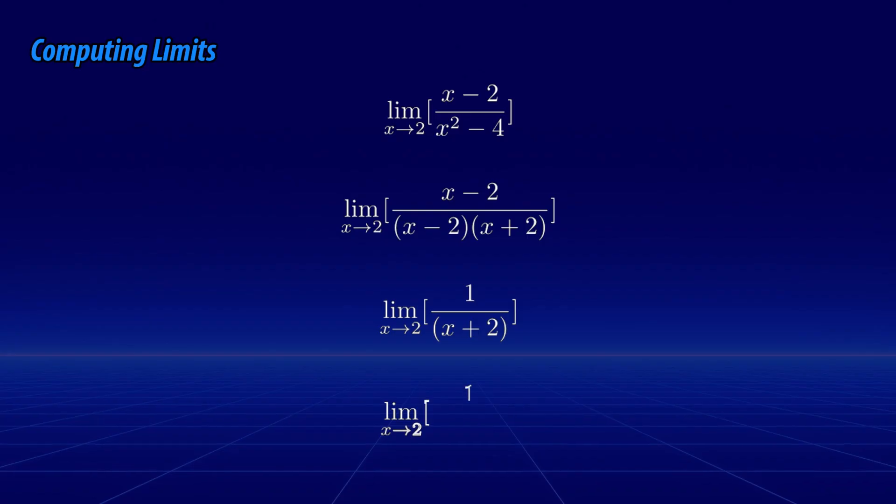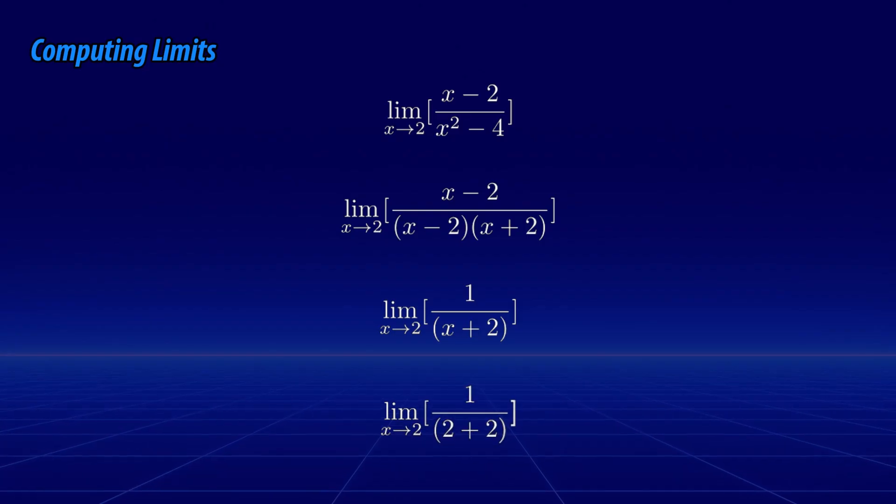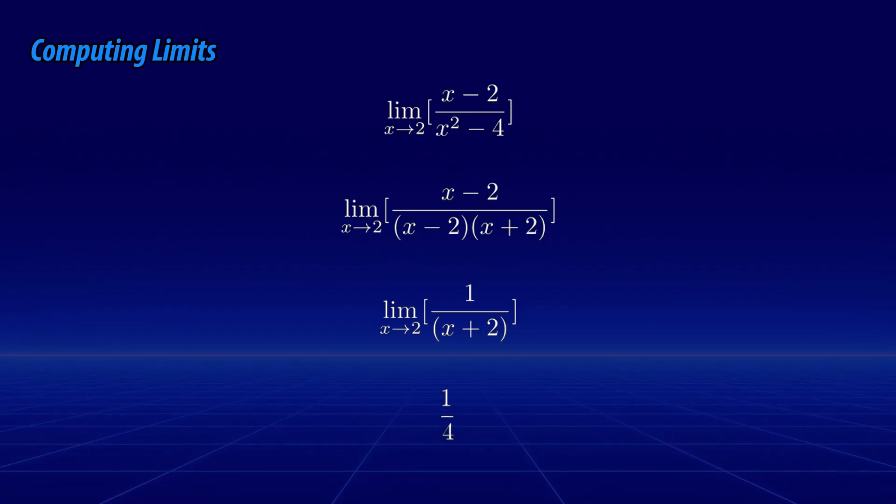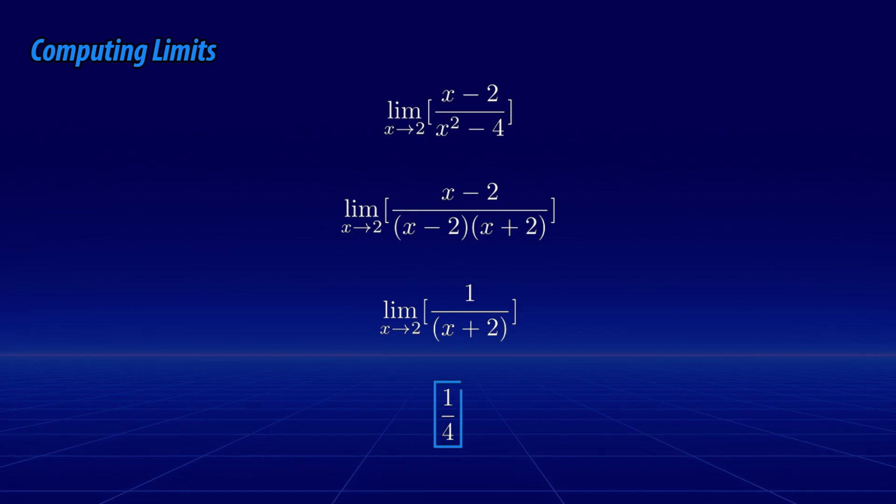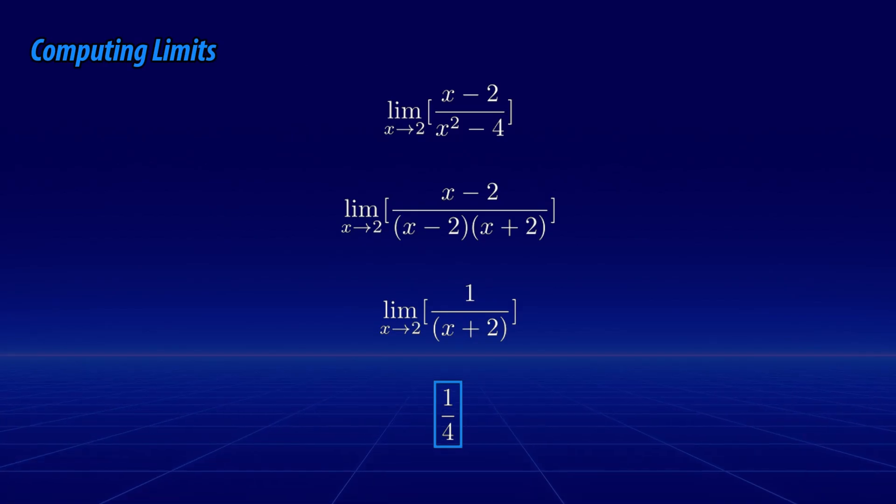Once you simplify and cancel out all possible terms, you can simply substitute x equals 2 into your function to obtain the limit. In this case, the limit of the function as x approaches 2 is 1 over 4, even though the function is undefined at that exact point.